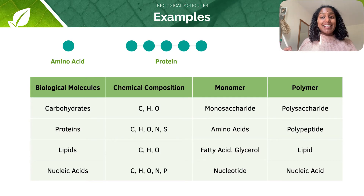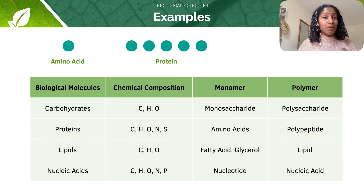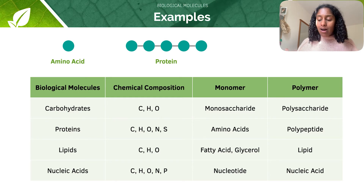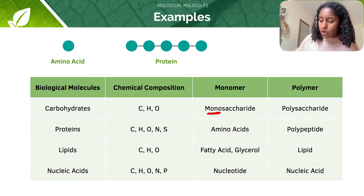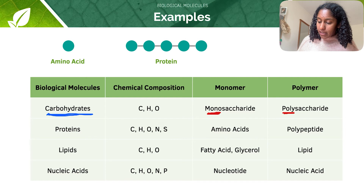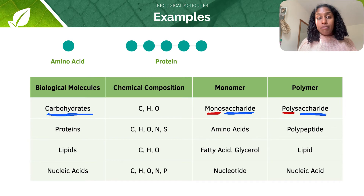Let's put this into practice with some examples. In carbohydrates, the monomer is the monosaccharide, which means many monosaccharides join together to form the polymer — a polysaccharide. A useful way to remember this: 'mono' is one, 'poly' is many, and 'saccharide' is the stem for carbohydrate. So if it's a monomer of carbohydrate, it's a monosaccharide; if it's a polymer, it's a polysaccharide.